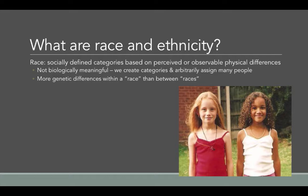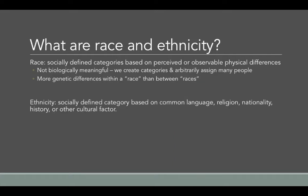Ethnicity is a little different. Ethnicity is also socially defined, but it's a category based on common language, religion, nationality, history, or another cultural factor. We often hear — particularly from white people, but also from Hispanic and Asian people — talk about ethnicity: I'm Italian, I'm Jewish, I'm Chinese, I'm Japanese, I'm Korean, I'm Cuban, I'm Venezuelan, I'm Mexican. All of those are considered ethnicities because what ties people together is language, religion, history, nationality, culture, and traditions.